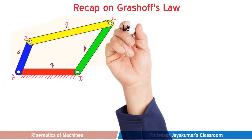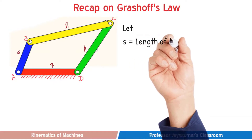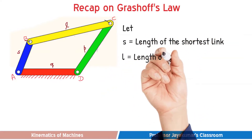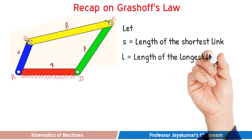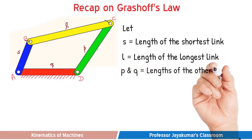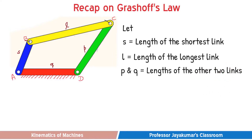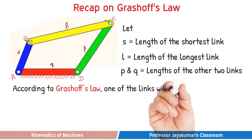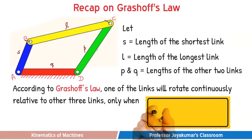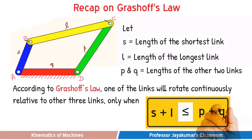This law can be applied for a 4-bar chain. Let S be the length of the shortest link, L the length of the longest link, and P and Q the lengths of the other two links. According to Grasov's law, one of the links will rotate continuously relative to the other three links only when S plus L is less than or equal to P plus Q.